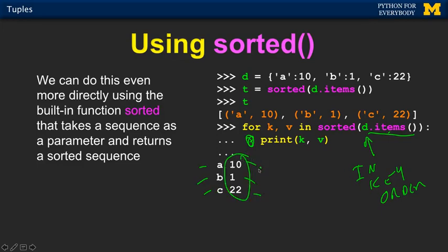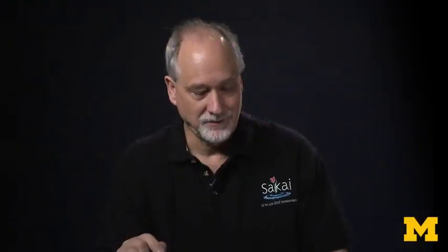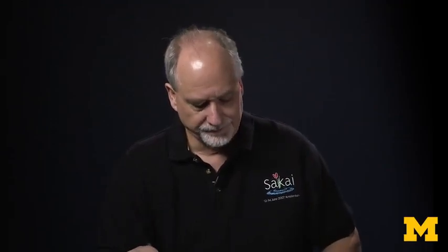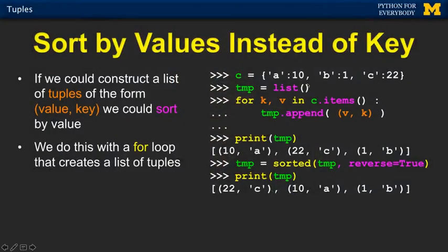Now we're going to quickly get to how to sort by value. Sorting by key is really easy, but it takes a little more work to sort by value — and we're going to be using tuples. So if we think of these, we can get key-value tuples, and all we have to do is make value-key tuples.